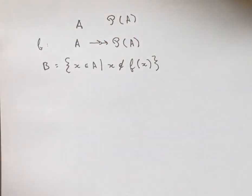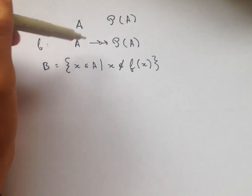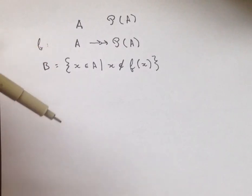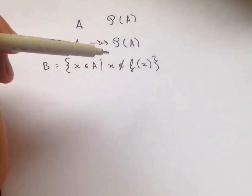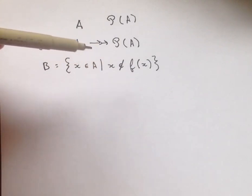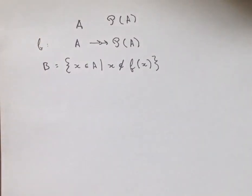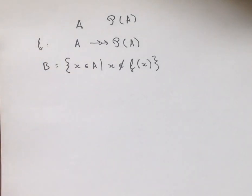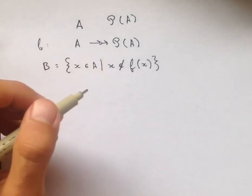So this is a little confusing to start with. It's important to remember that our function F takes elements of A to elements of the power set of A, and elements of the power set of A are subsets of A. So asking whether x is in F of x is asking whether x is in the subset of A that is mapped to by the function F. And so what we get is a set B, which is also a subset of A because it's the set of all x in A that satisfy this condition.